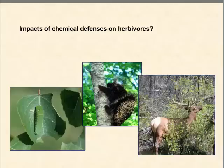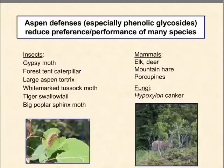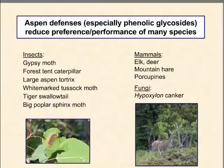What are the impacts of these chemical defenses on herbivores? We've done a number of different feeding studies with insects and with mammals. So far we know that these compounds — especially the phenolic glycosides — reduce the preference and/or performance of a number of insect species, including both generalist and specialist insects, and a number of mammals such as elk, deer, mountain hare, and porcupine. The phenolic glycosides have also been shown to be effective in combating fungal pathogens such as Hypoxylon canker.